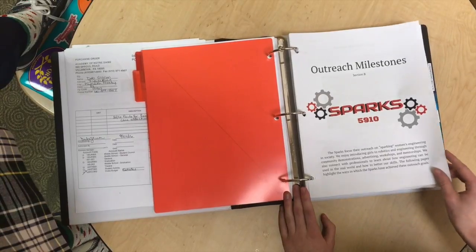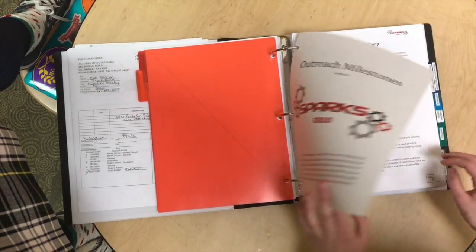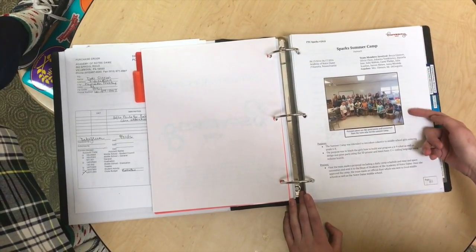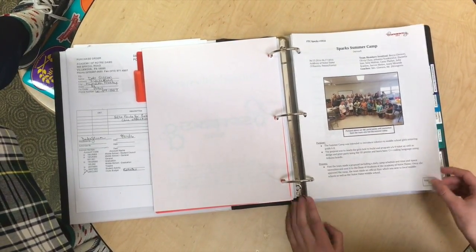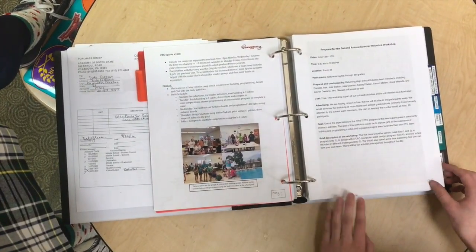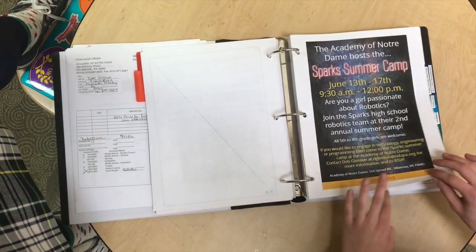In this section, you should also include information about your team's outreach activities. Our team does this with milestones, a format unique to our team. In each milestone, we include the purpose of each project, the process of completing each project, and what we ended up with. We also include pictures and other relevant materials.